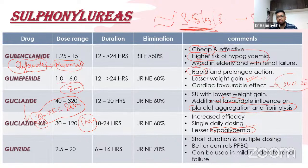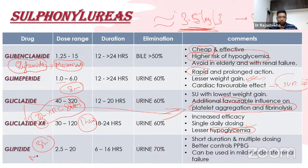The sulfonylurea with antiplatelet and fibrinolytic action is gliclazide. It is also the safest sulfonylurea in mild-to-moderate renal failure — you can start at 2.5 mg in divided doses (BD or TID) in renal patients.